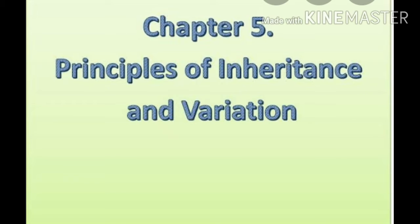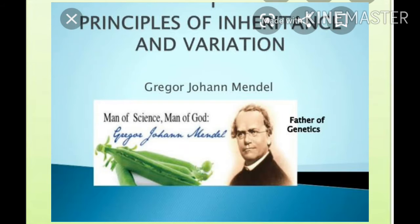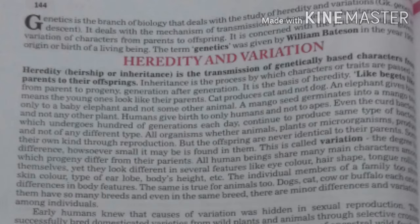Since the beginning of human history, people have wondered how traits are inherited from one generation to the next. Although children often look more like one parent than the other, most offspring seem to be a blend of the characteristics of both parents.